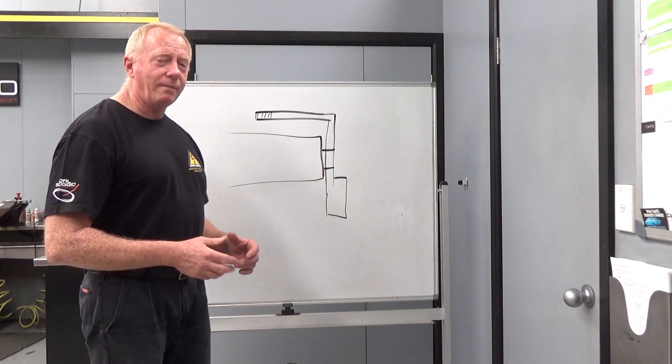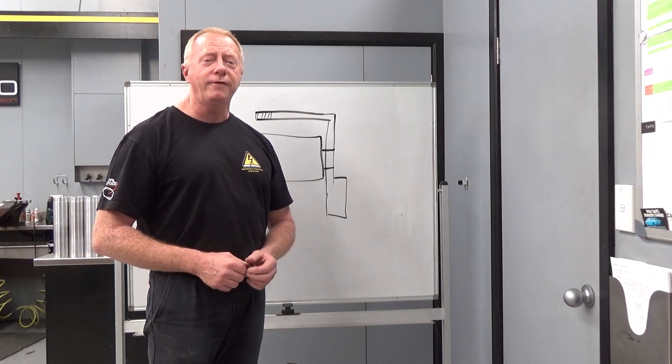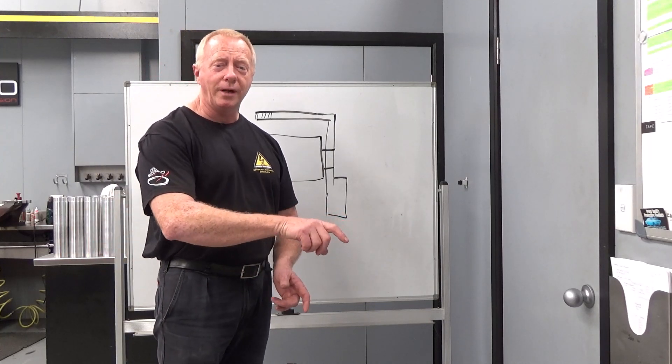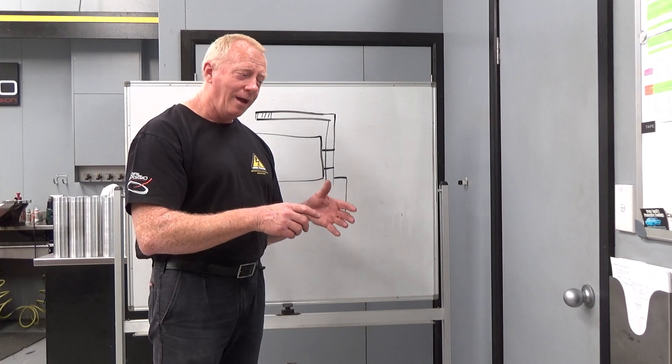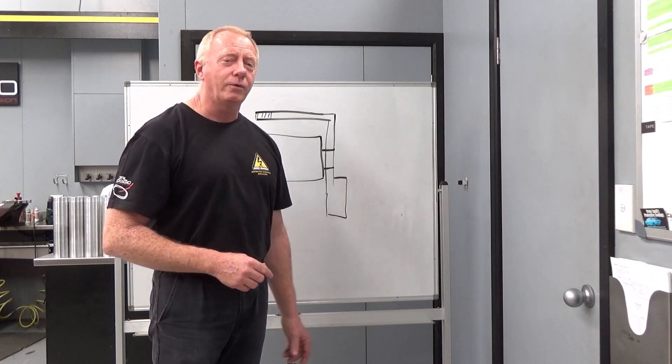And the same thing with our motorcycles. When we have a very light feel at the bars, we're actually not generating that much force against the ground, and so the bike will tend to run a bit wide on a corner exit.